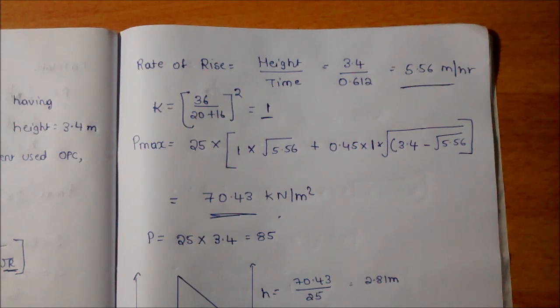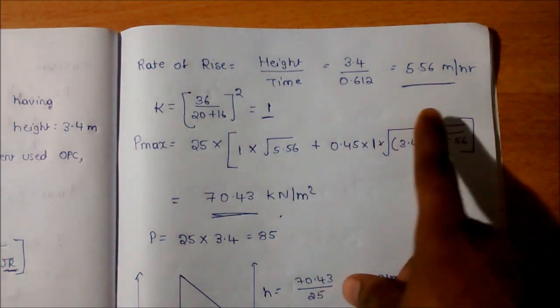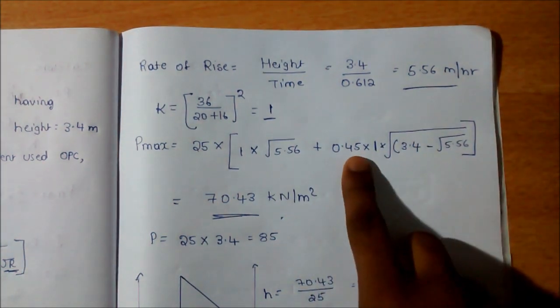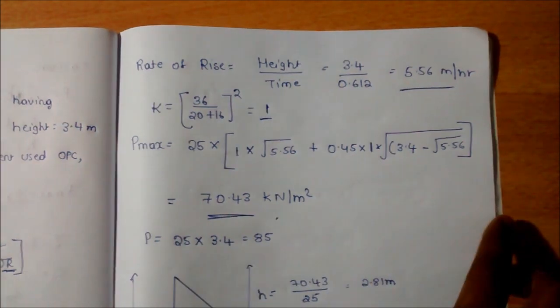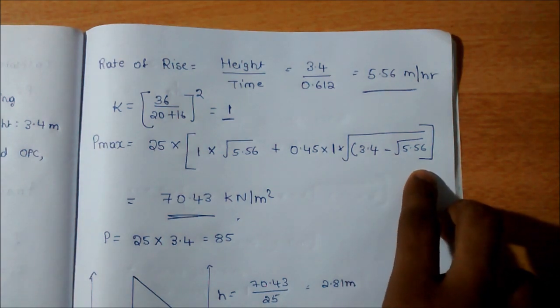Let's start. The density of the concrete is 25, we assume. C1 is 1, and R is determined as 5.56. Then C2 is 0.45 for OPC as I discussed, and K is 1. Then 3.4 is the height, and R is the rate of rise, that is 5.56.